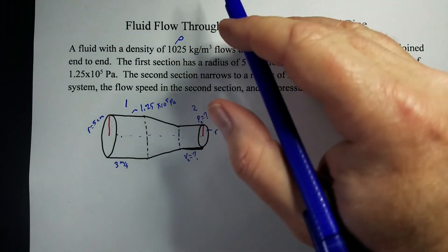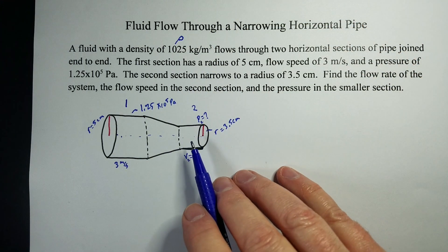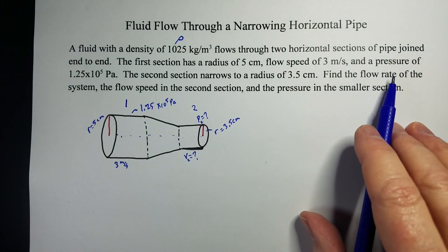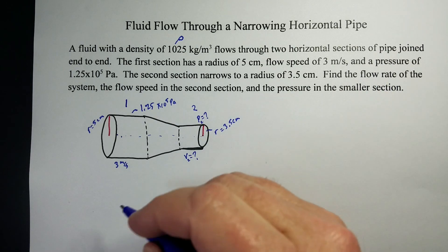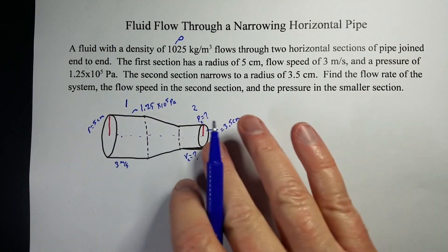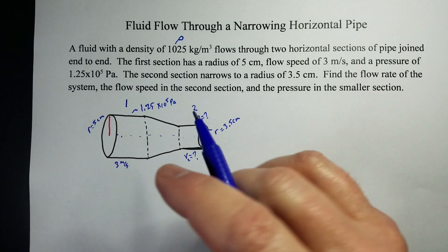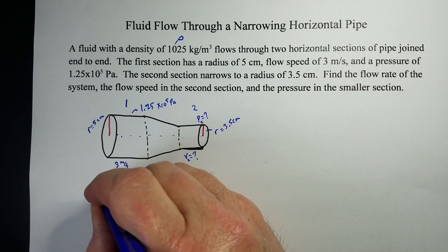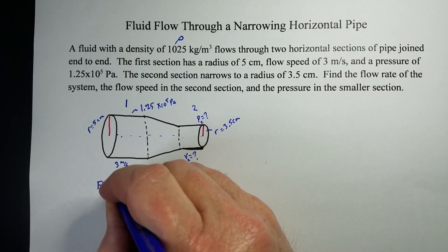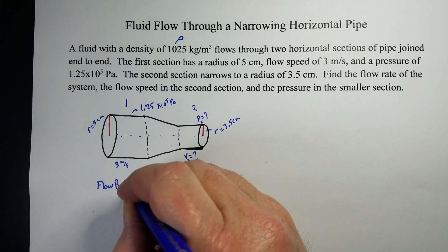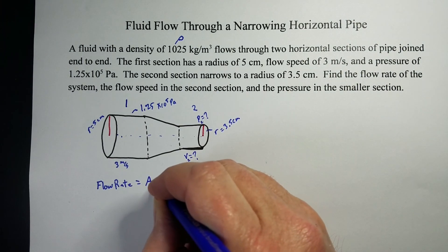And we use rho for density, and we are going to first figure out the flow rate. Well, the flow rate is the volume of liquid that flows through this pipe every second. So, to figure out flow rate, what we need to do is take area times velocity.